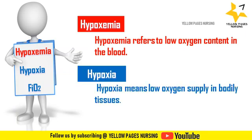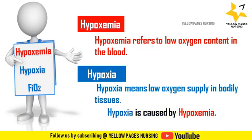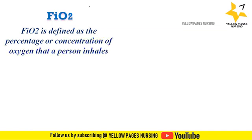Next is hypoxia — hypoxia means low oxygen supply in bodily tissues. In order to maintain adequate homeostasis, hypoxia is caused by hypoxemia. So if there is not enough oxygen in the blood, the blood cannot deliver enough oxygen to the body tissues as it circulates, and this leads to hypoxia. Next comes FiO2.